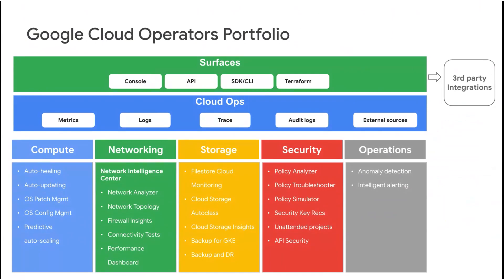The second group of day two operations activities are related to aggregate observability across the entire platform, including GCP services and applications that users deploy on top of these services. These activities are performed either at a fleet level, service level, or at an application level. These observability capabilities include monitoring, logging, tracing, and auditing, and they help customers understand the health of their GCP deployments and troubleshoot problems. The top layer provides different surfaces through which these capabilities can be accessed, including APIs, SDKs, the Google Console, and automation using tools like Terraform. As you plan your day two activities, it is critical to understand the breadth and depth of these capabilities and develop a strategy for how the organization will leverage them.